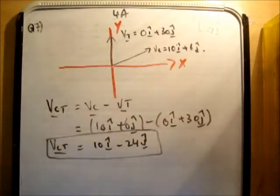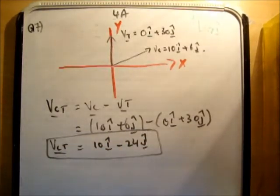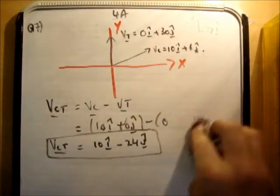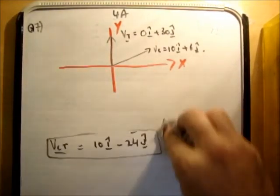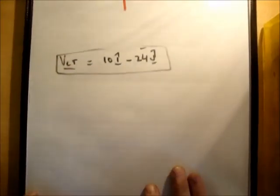So that is the velocity vector, the velocity of the car relative to the train, where the train believes or the train feels or is analysing the motion saying that it is stationary.